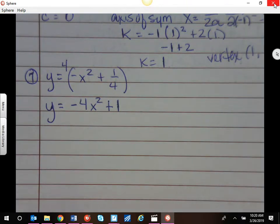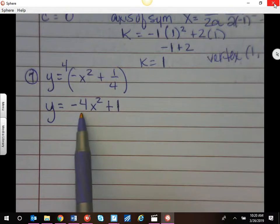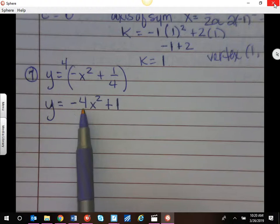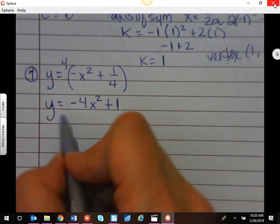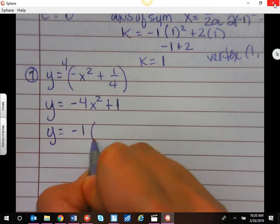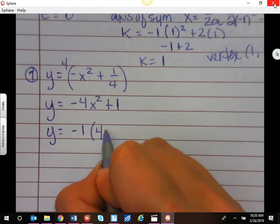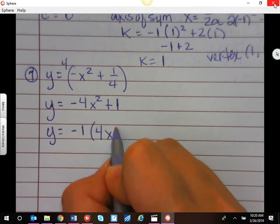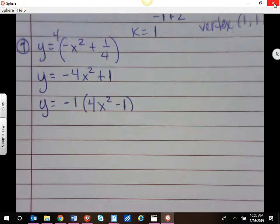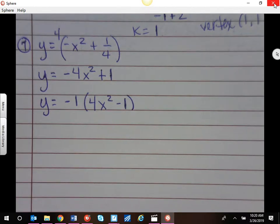This a is negative, so it's going to open down, we know that. Also, you can do a couple of things here. If you want to factor out a negative 1 so a is positive, that's fine. I guess negative 1, I'm going to have 4x squared minus 1, and we can do our cross puzzle to do our factors for that.